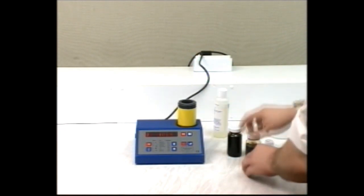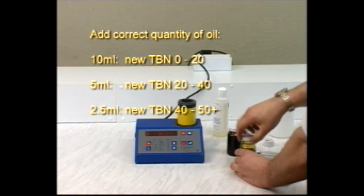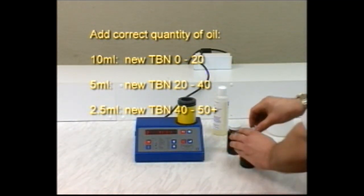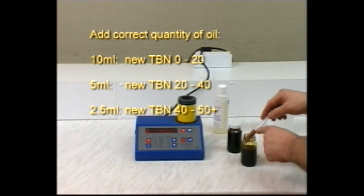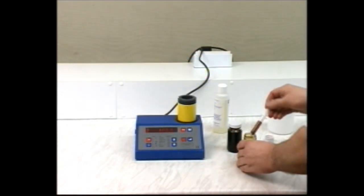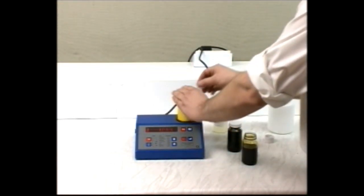Add the correct quantity of oil: 10 mL for a TBN of 0 to 20, 5 mL for a TBN of 20 to 40, 2.5 mL for a TBN of 40 to 50. Replace and tighten the end cap.